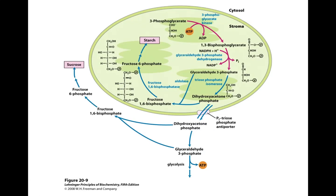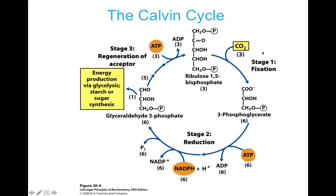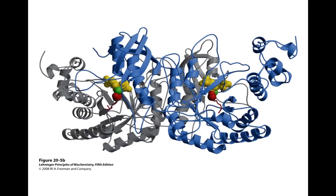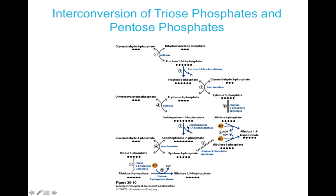So to summarize: the first stage is carbon fixation. The second stage involves the fate of glyceraldehyde 3-phosphate, where we reduce it — essentially converting it to starch — and this second stage occurs in the chloroplast. Then we have to recycle and regenerate our ribulose 1,5-bisphosphate. The third stage is the interconversion of the triose phosphates. All I want you to understand is that we're recreating ribulose 1,5-bisphosphate at the cost of ATP as we go through.